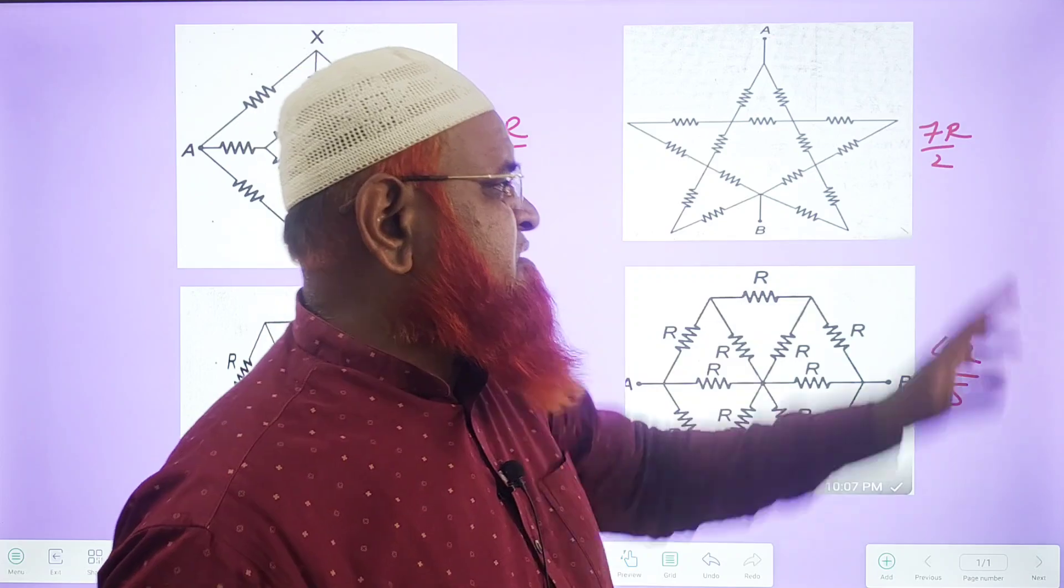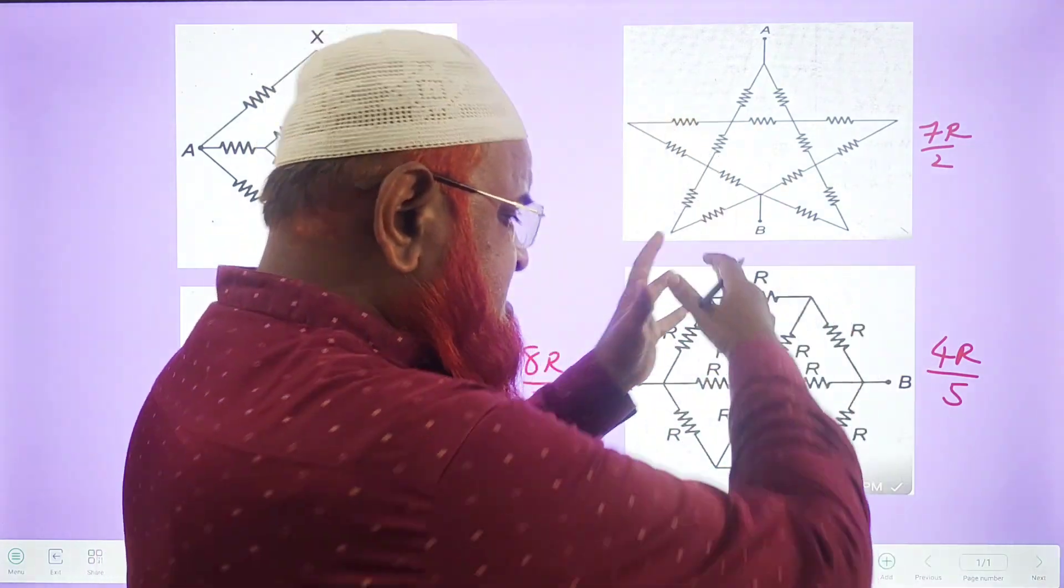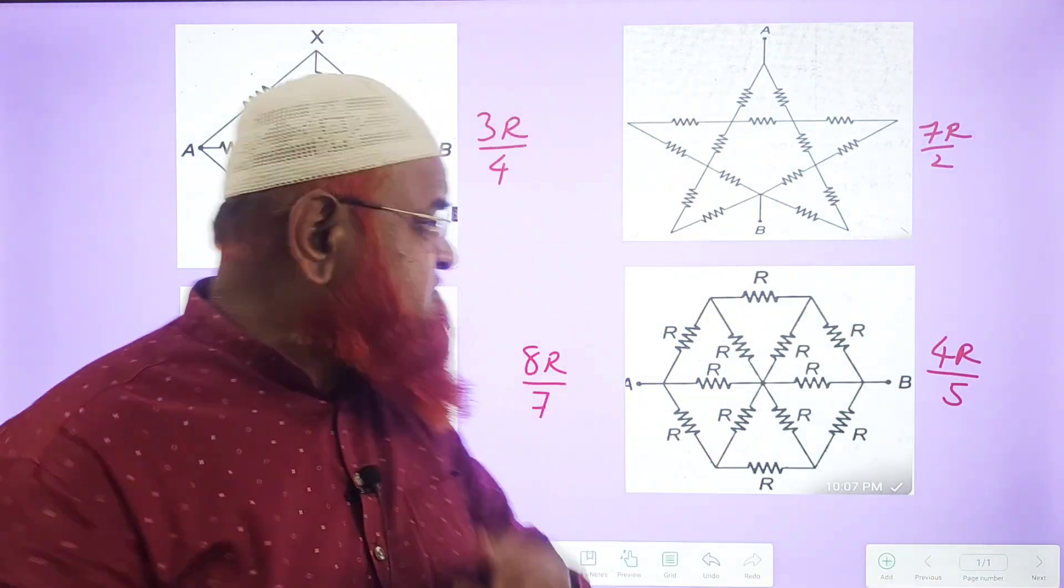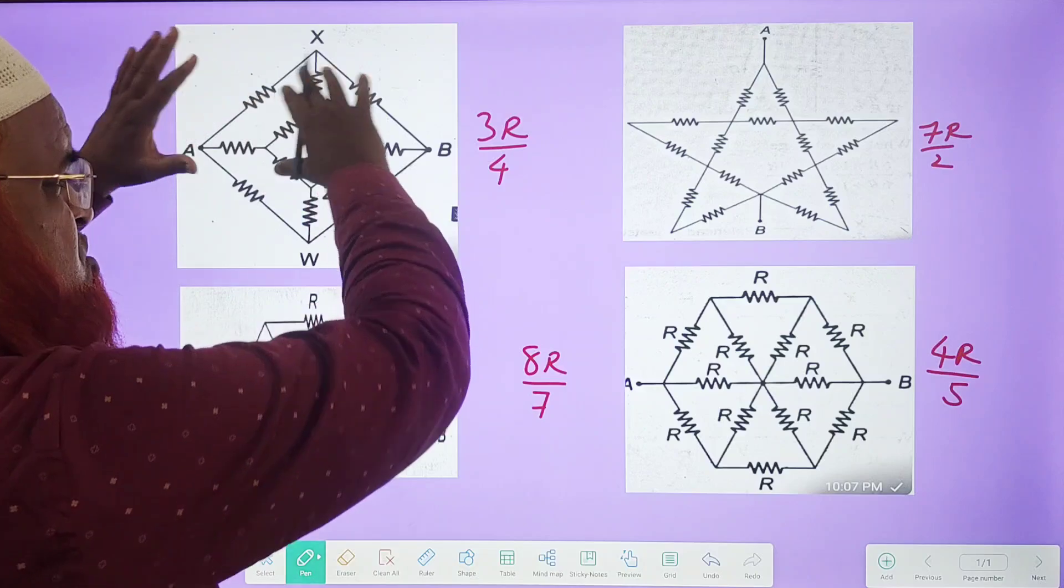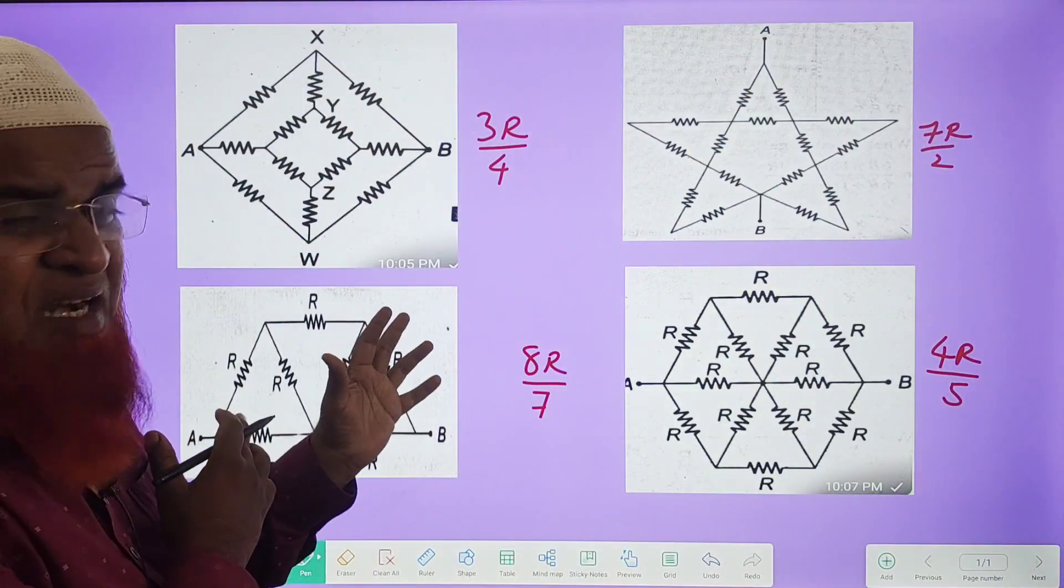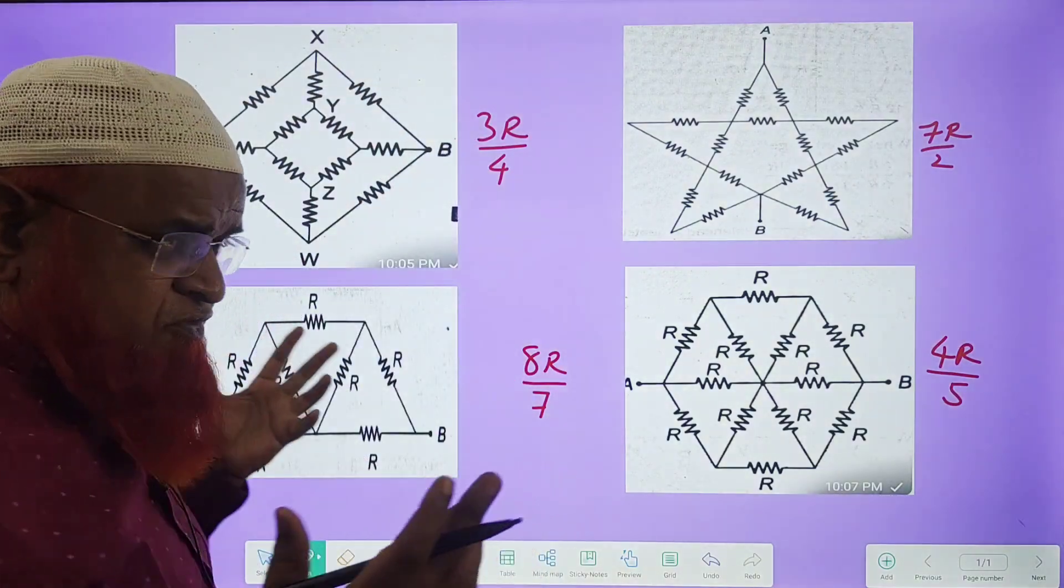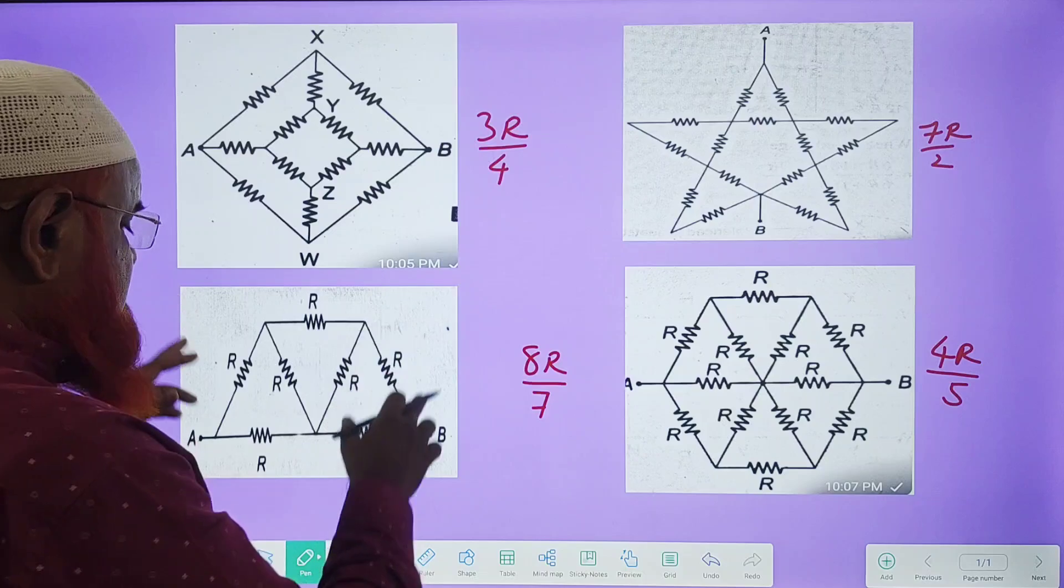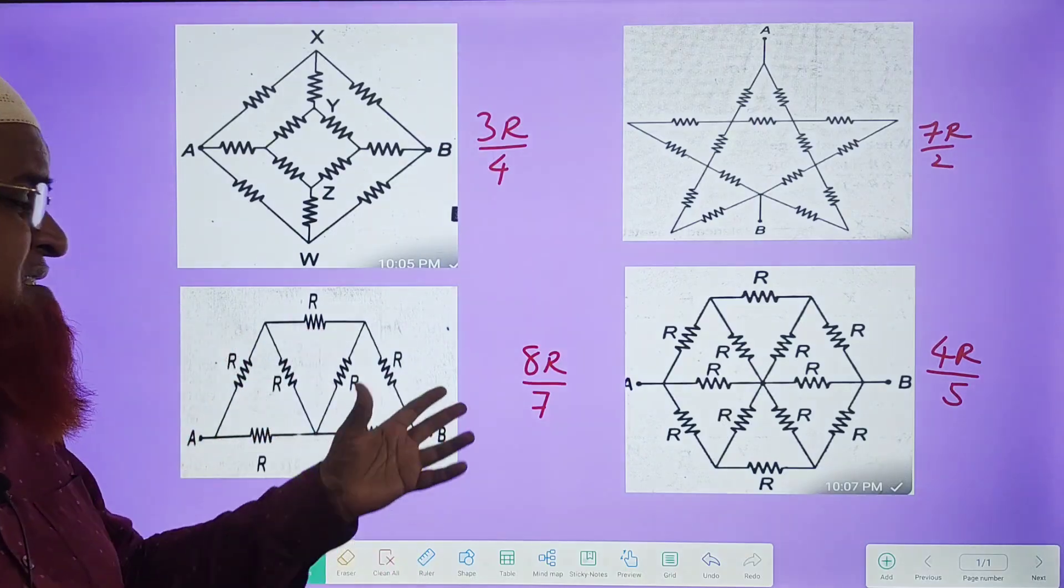For example, if it is a star it is 7r by 2. If it is this type of hexagon it is 4r by 5. If this is a square shape or rhombus shaped circuit, it's 3r by 4, and if it is this pyramid shaped circuit it is 8r by 7.